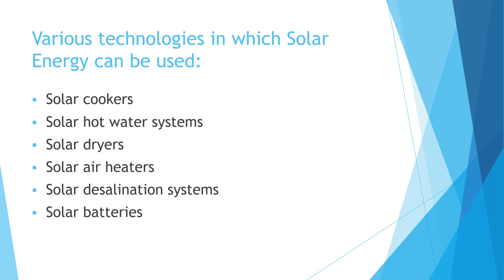The various technologies in which solar energy can be used are solar cookers, solar hot water systems, solar dryers, solar hair heaters, solar desalination systems, and solar batteries — there are still many more. We can also use solar panels in our house so we don't have to pay any electricity bill.